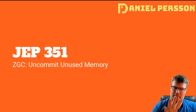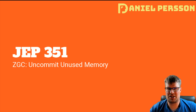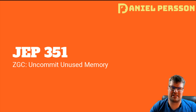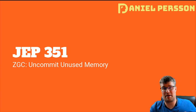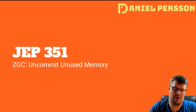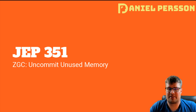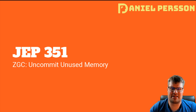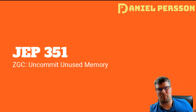Next up we have JEP 351, an improvement to ZGC. ZGC is a garbage collector that can handle from 200 megabytes of memory all the way up to terabytes, and it's a very low-latency garbage collector — garbage collection should not take longer than 10 milliseconds. The latest improvement addresses the fact that previously ZGC didn't really give any memory back.